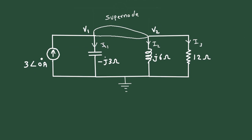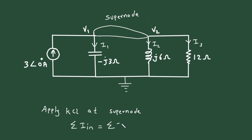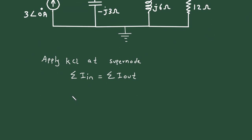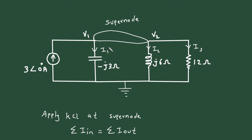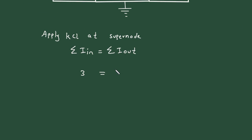Now we will apply KCL at the super node. According to KCL, that is Kirchhoff's Current Law, the summation of all currents entering a node equals the summation of all currents leaving the node. At this super node, the only entering current is 3 amperes at 0 degrees. So we write: 3 equals I1 plus I2 plus I3, which are the leaving currents from the super node.